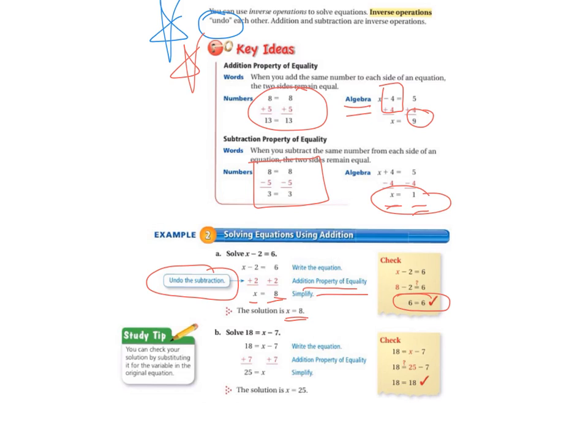And then letter B. 18 equals x minus 7. So we write the equation. And we see that once again we have subtraction. And that's what we want to undo. So we use the addition property of equality. So we add 7 to both sides. And since 18 plus 7 equals 25, our 7s go away. And so we have x on the right. So 25 equals x. We check. And 18 equals 18. So the solution is x equals 25.